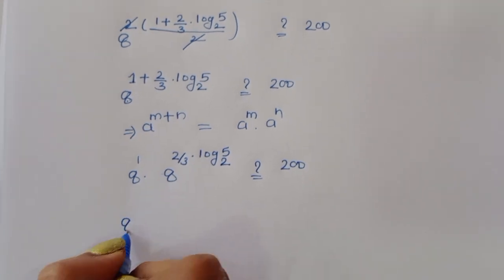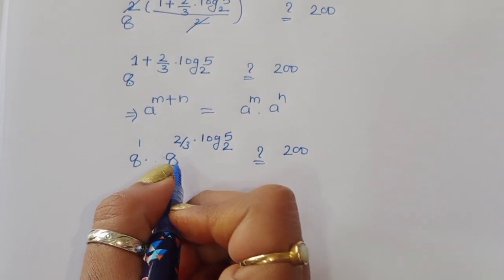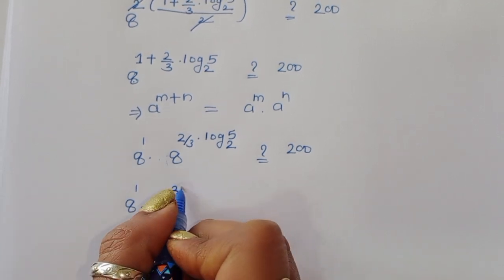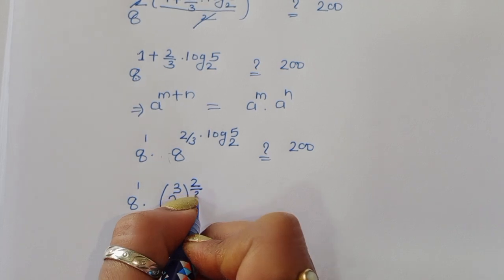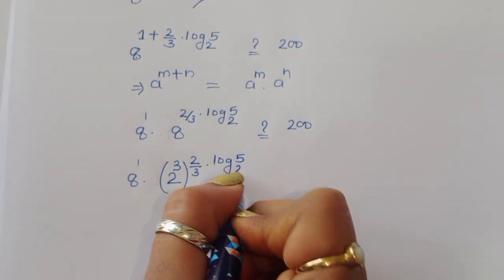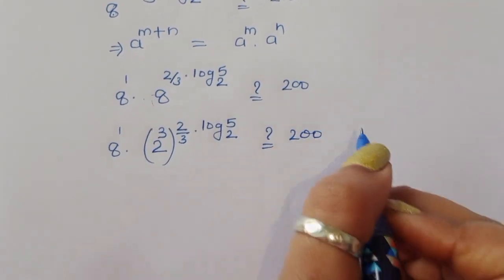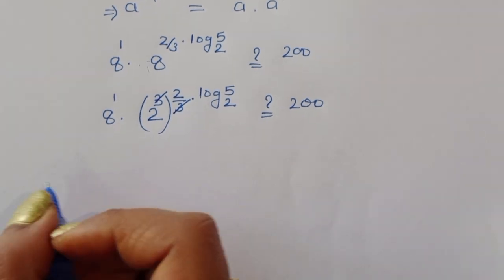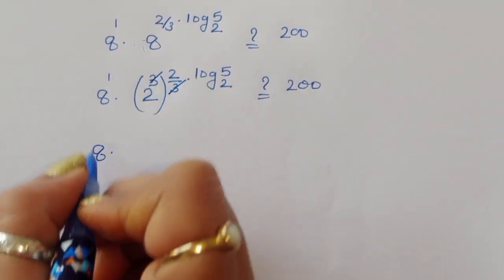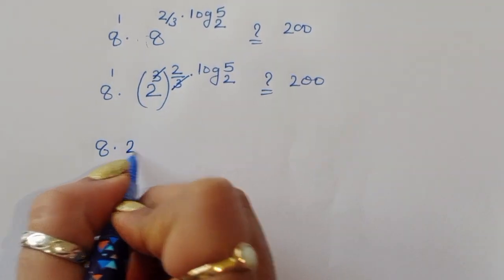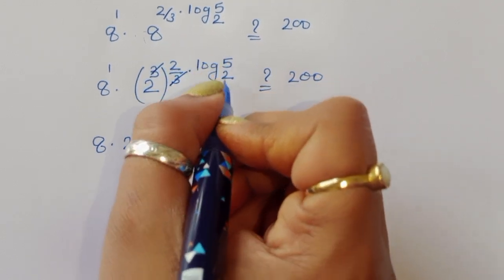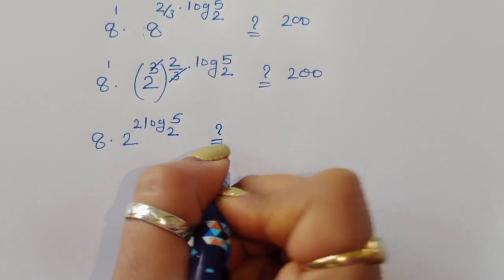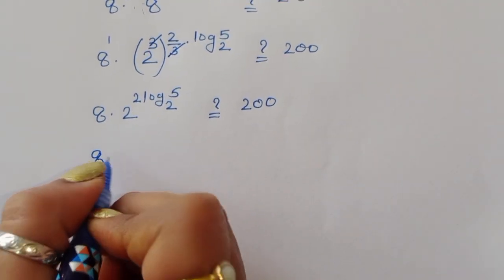Using the formula a power m plus n equals a power m times a power n, we write 8 power 1 times 8 power (2 upon 3 times log₂5). Now 8 equals 2 power 3, so we substitute: 8 times 2 power 3 times (2 upon 3 times log₂5). The 3 and the denominator 3 cancel, leaving 8 times 2 power (2 log₂5).